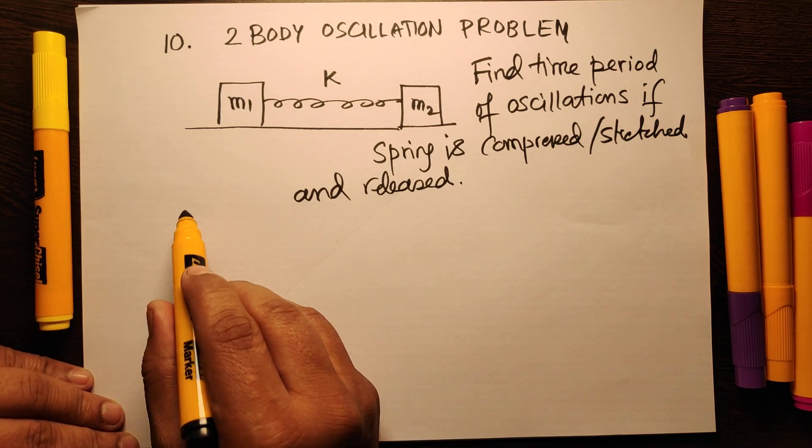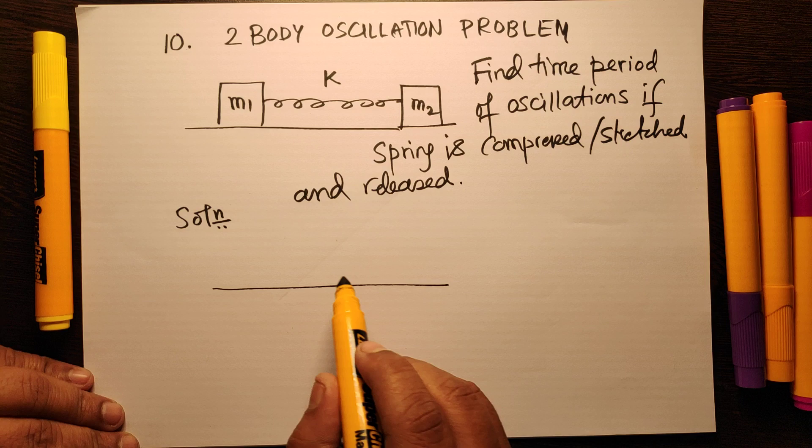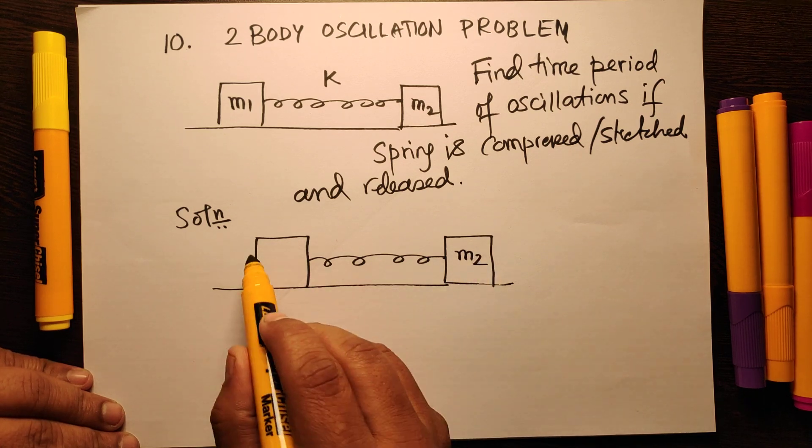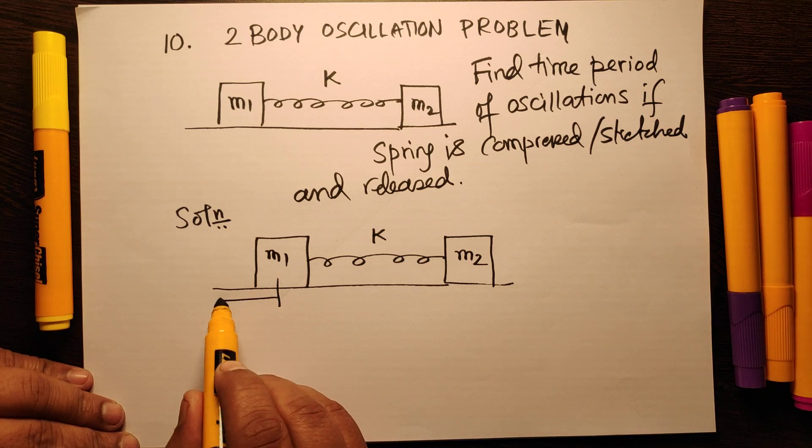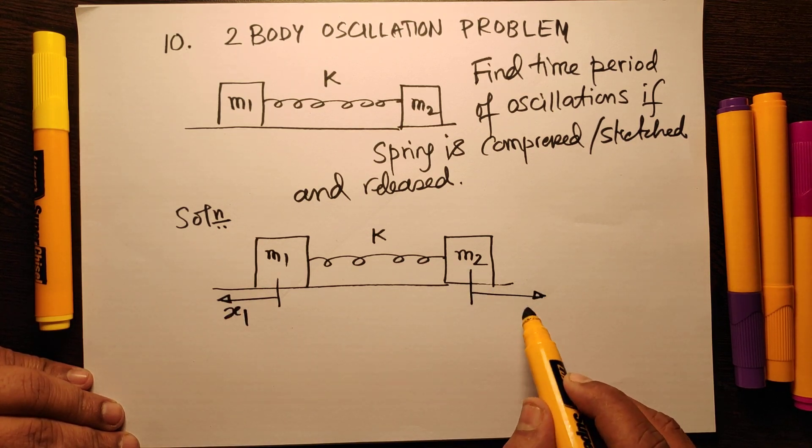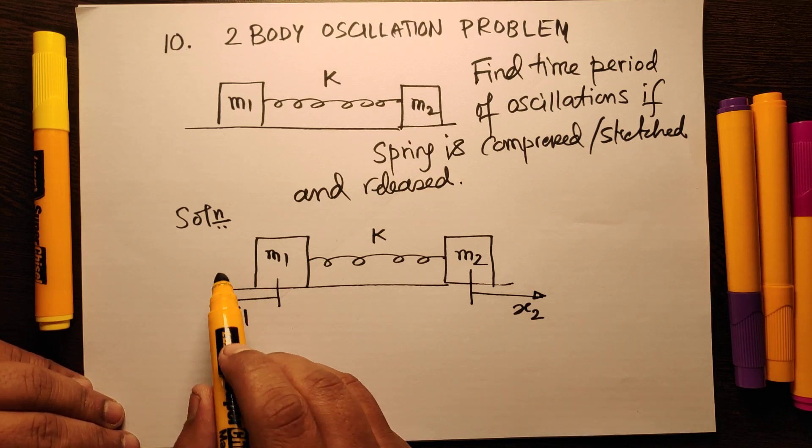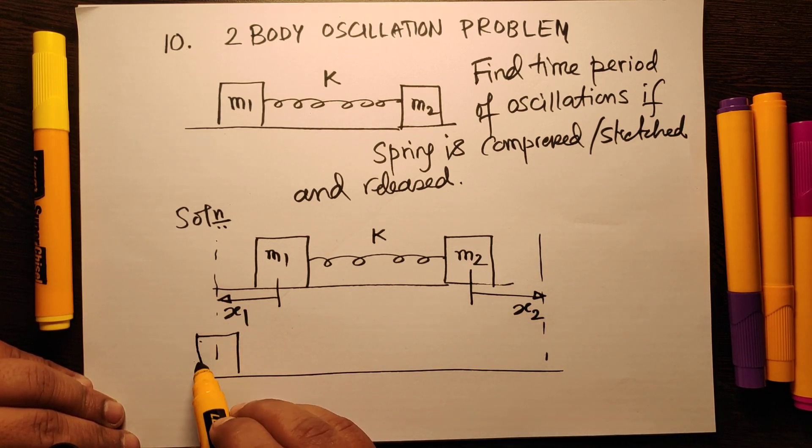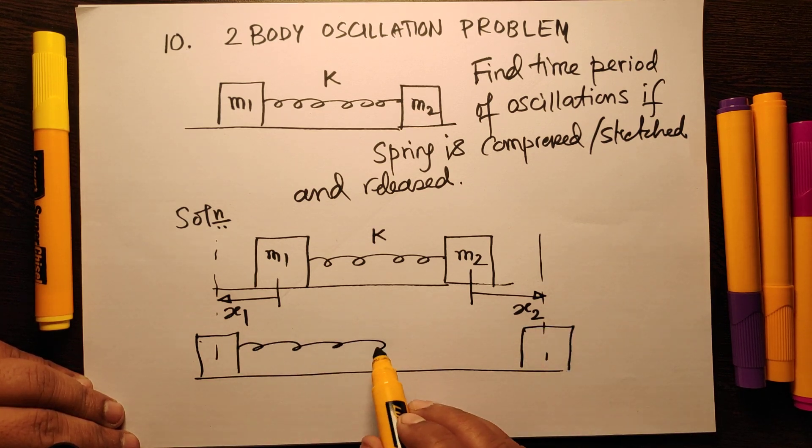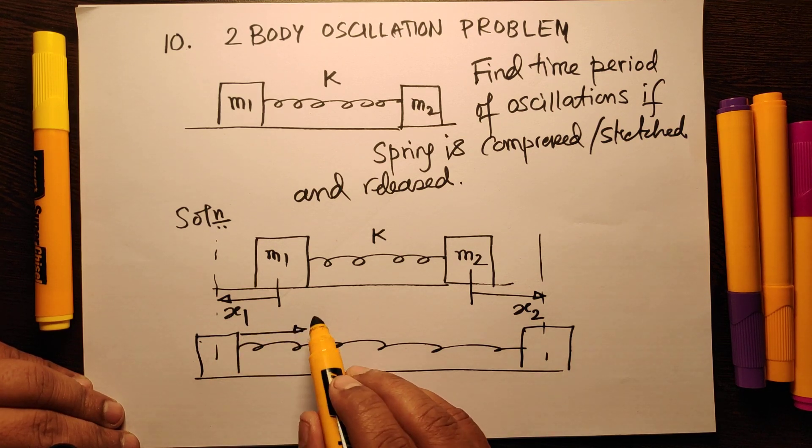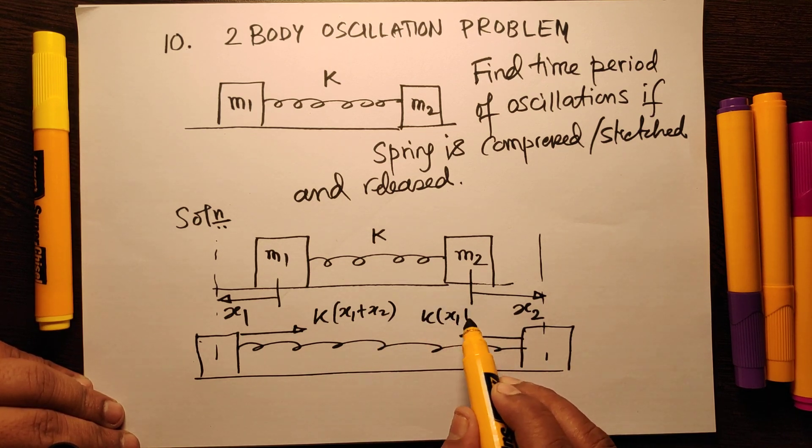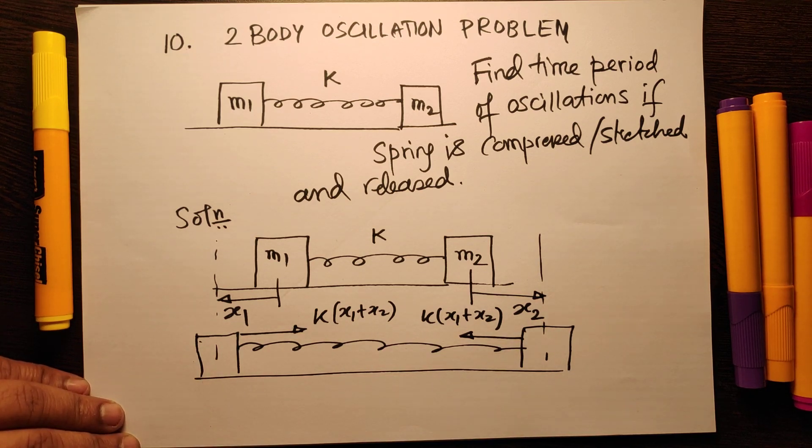We will begin the solution like this: say these blocks m1 and m2, spring of force constant k. Say this moves towards the left by x1 and this moves towards the right by x2. Let us draw the blocks again - blocks will go to these positions. The spring is stretched by a total distance of x1 plus x2, so this will be the force k times x1 plus x2, and the same force will act on this, k times x1 plus x2, while this block moves in two directions.